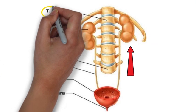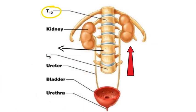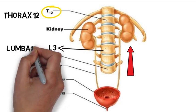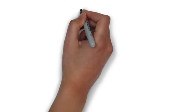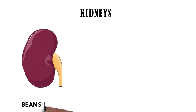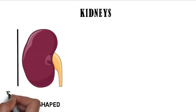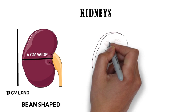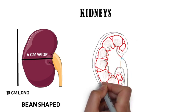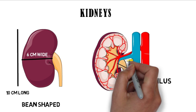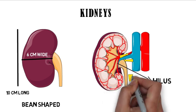The kidneys are approximately at the vertebral level T12 to L3, where T12 stands for thorax 12 and L3 for lumbar 3. The kidneys are bean-shaped organs located on either side of the vertebral column, measuring 10 cm long and 6 cm wide. The concave side of each kidney is called the hilum, through which the renal artery enters and the renal vein and ureter exit.